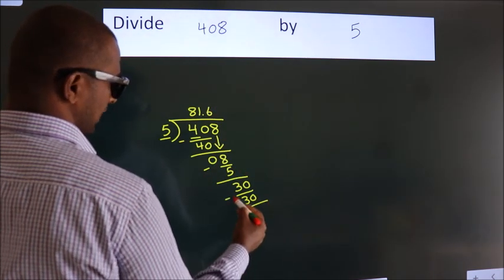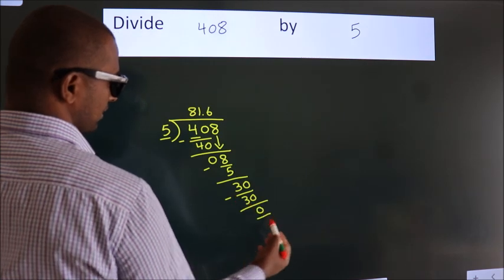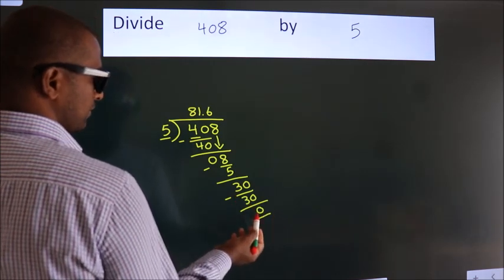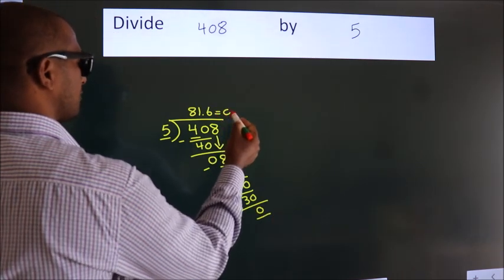Now we subtract and get 0. We got remainder 0, so this is our quotient.